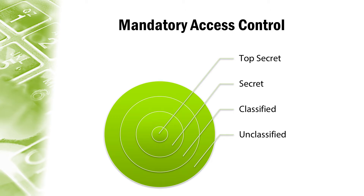Objects in these systems, such as files, are assigned security labels that restrict who is allowed to access them. A label contains the required clearance level, which often ranges from classified to unclassified, secret, top secret, and so forth. Users of the system are assigned clearance levels.